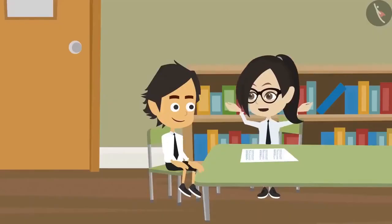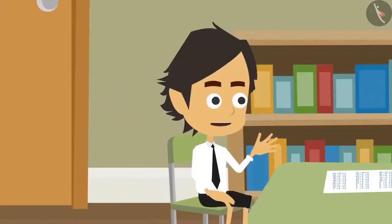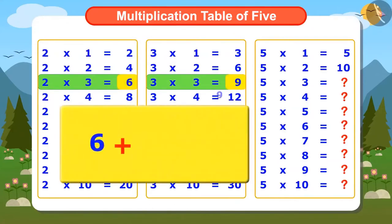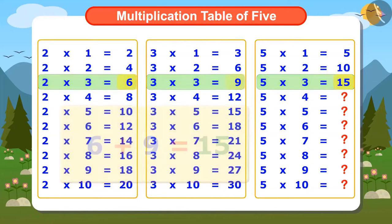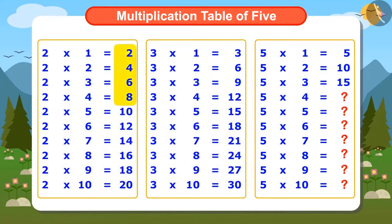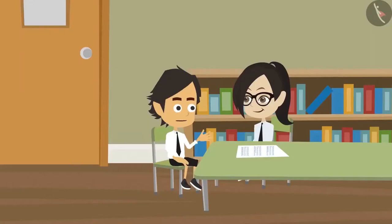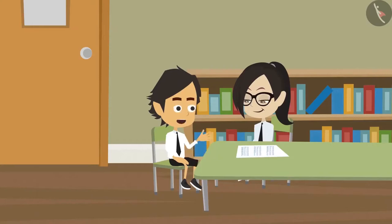Oh wow! Then we can find the third number in the multiplication table of 5 by adding the third numbers from the multiplication tables of 2 and 3, which are 6 and 9, giving us 15. In this way, we can find the complete multiplication table of 5 by adding the numbers from the multiplication tables of 2 and 3. Now I have understood. To find out the multiplication table of large numbers, we can use the multiplication tables of smaller numbers.